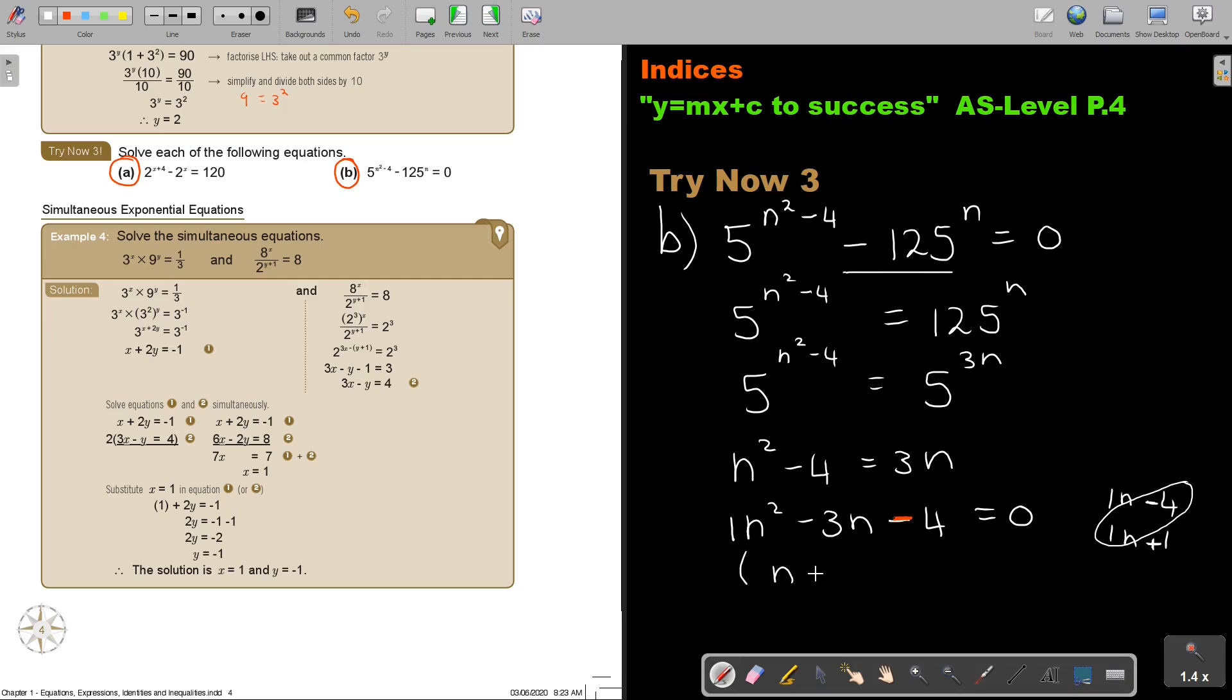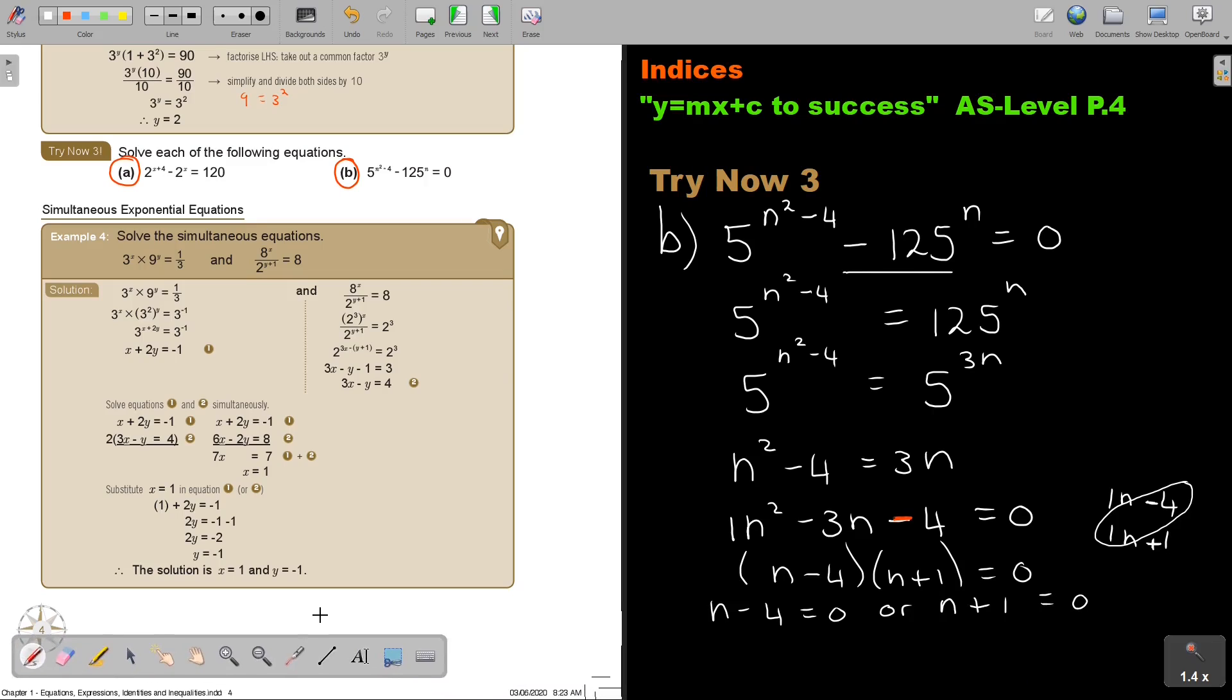So I'm ending up with n minus 4, n plus 1 is equal to 0. So n minus 4 is equal to 0 or n plus 1 is equal to 0. So therefore n is equal to 4 or n is equal to negative 1. And that is going to be my final answer.